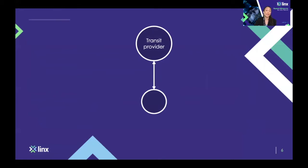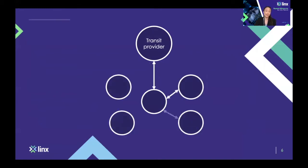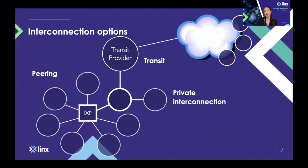As a network matures it might want to look at other options than just having one single connection to the internet through a transit provider. That's where it might be looking at peering. It might pull a private cable between itself and another network and do what's called private interconnection, or it might do public peering at a public internet exchange point. Most networks have a multitude of different connections — some transit, a few private interconnections, and also public peering at a public internet exchange point.